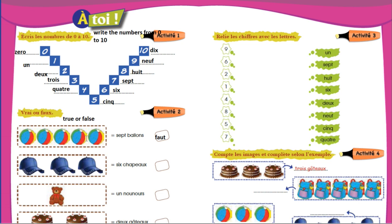False, because we have cinq balo. Un, deux, trois, quatre, cinq. Now, six chapeau — let's count: one, two, three. So here it is trois chapeau. So we will write false.